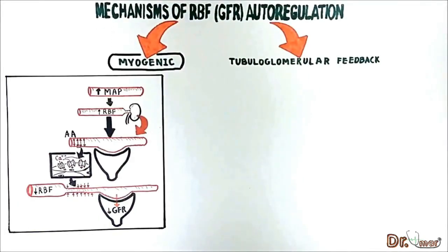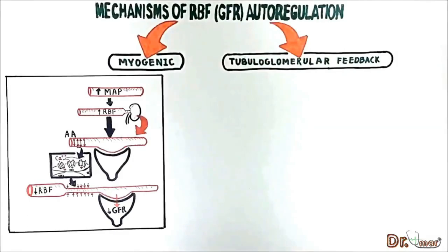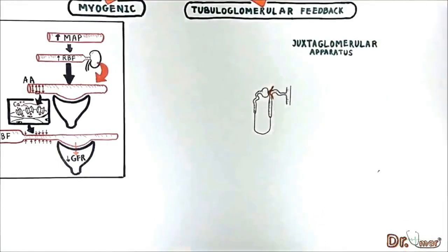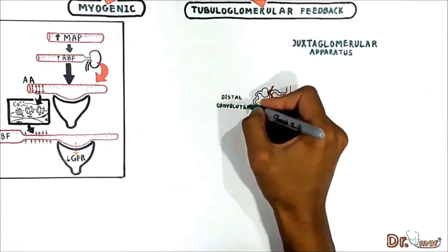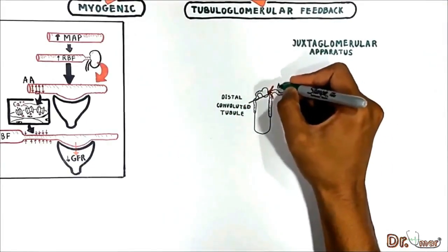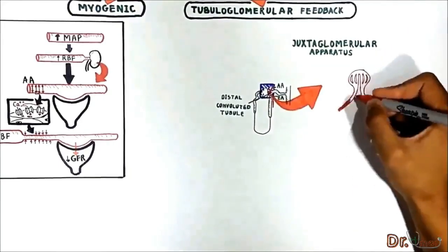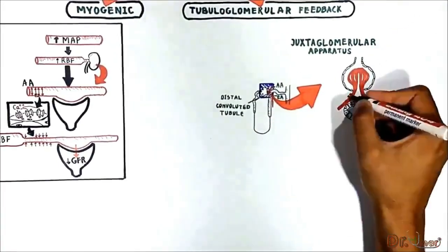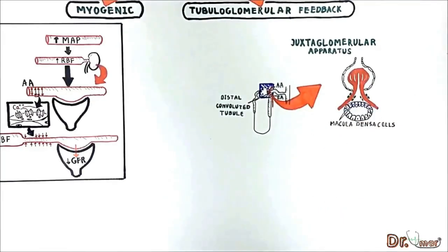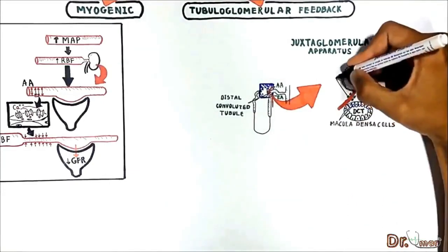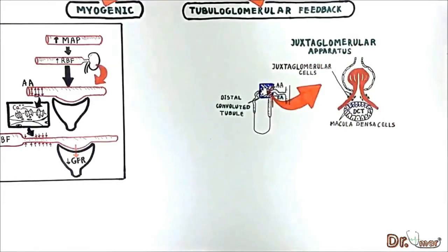The second mechanism that autoregulates renal blood flow and GFR is the tubuloglomerular feedback mechanism. This mechanism depends on the special anatomic arrangement of the juxtaglomerular apparatus — a specialized structure formed by the distal convoluted tubule and the glomerular afferent and efferent arterioles. It consists of two types of cells: macula densa cells, located in the initial portion of the distal tubule, and juxtaglomerular cells, located in the walls of the afferent and efferent arterioles.